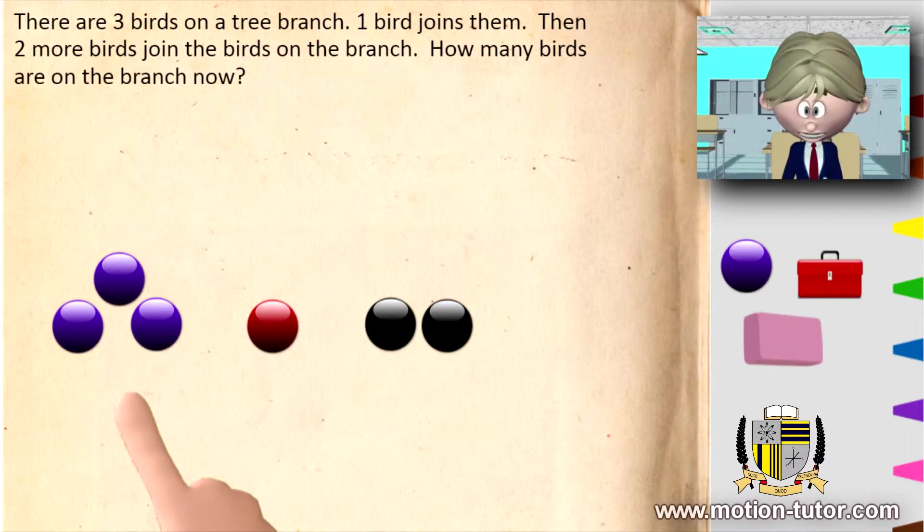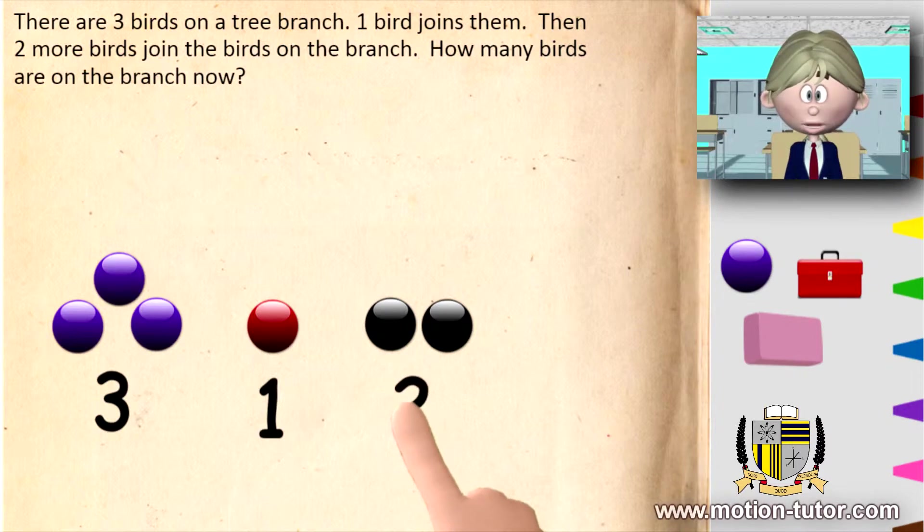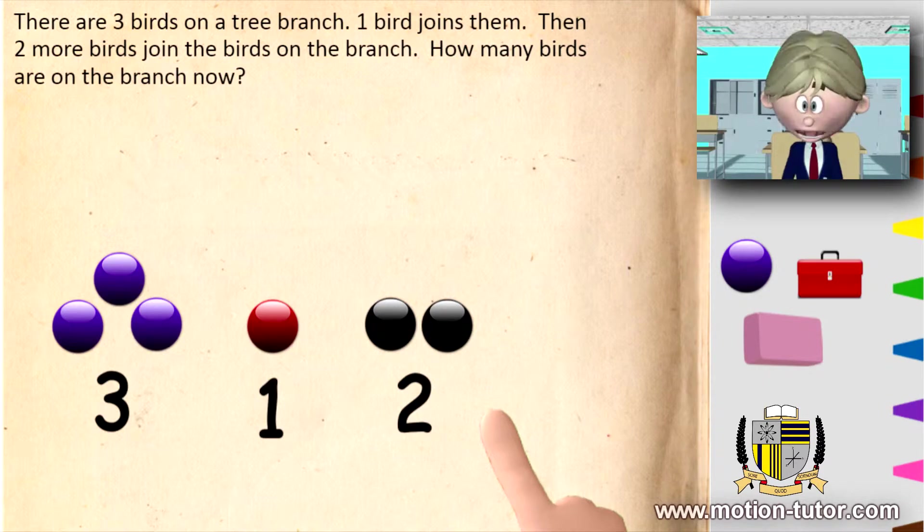So what we end up doing was actually we did three plus one. And then we did plus two. And together we end up having the answer of six or a sum of six.